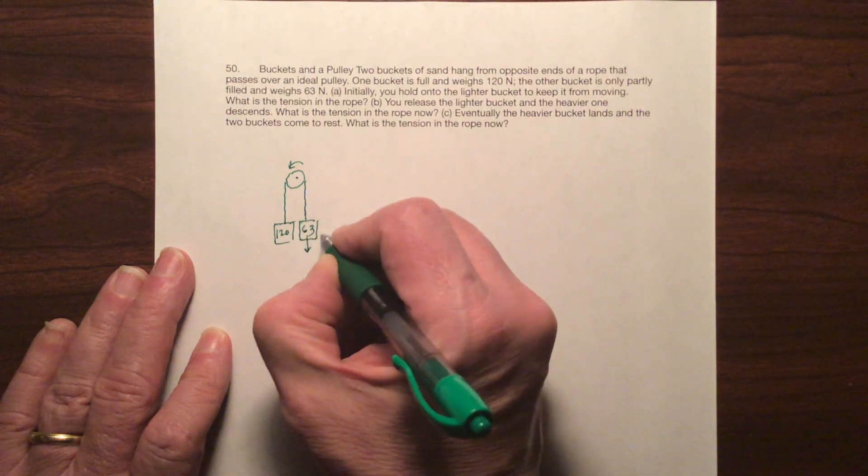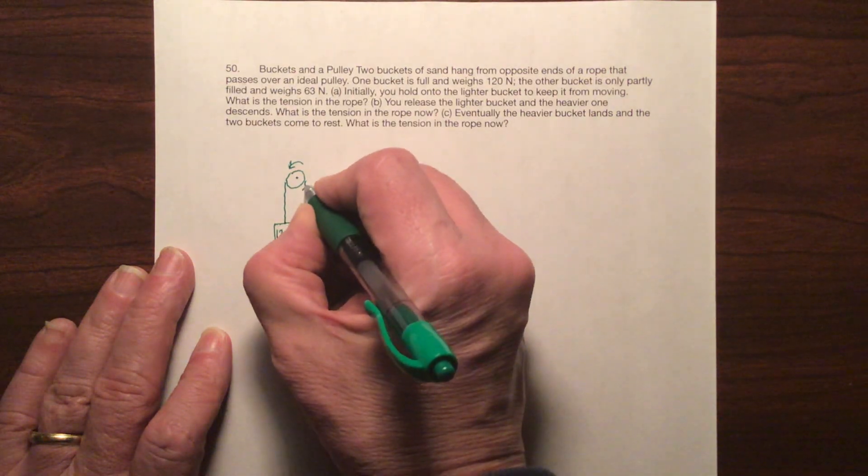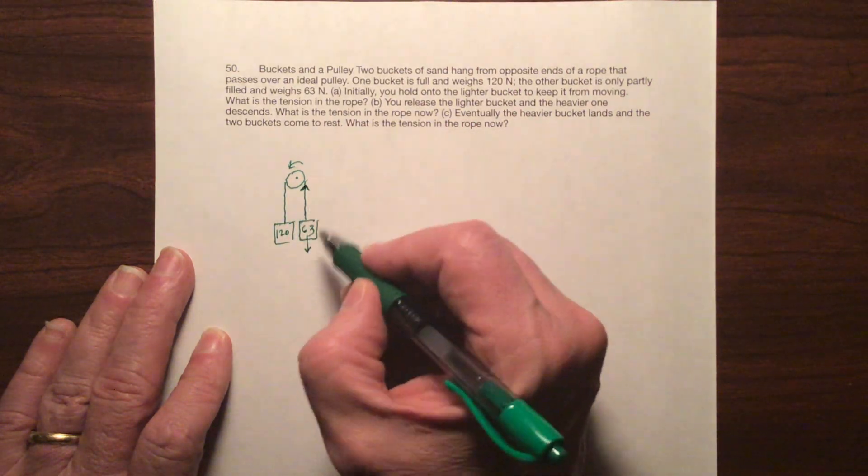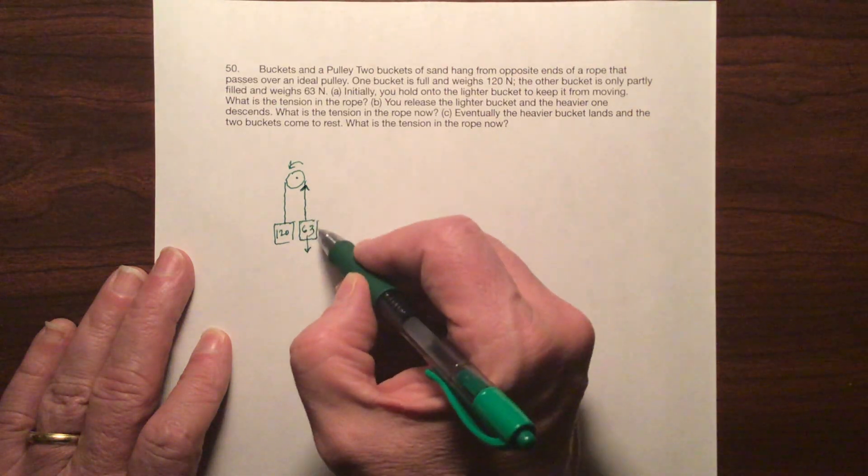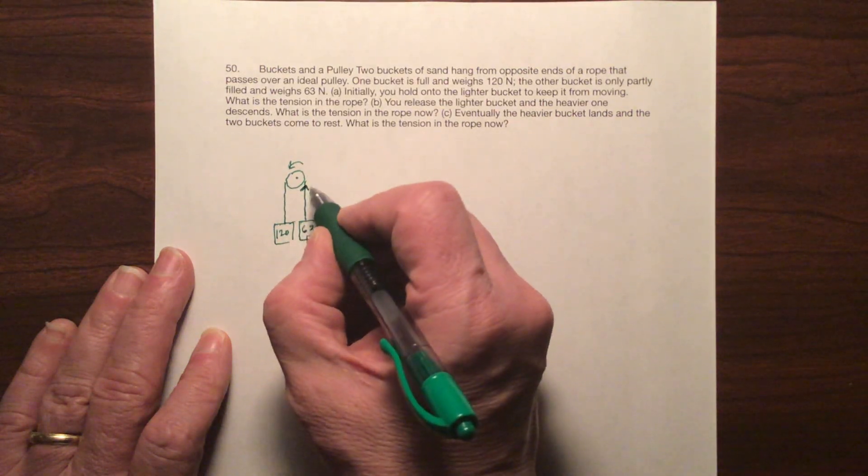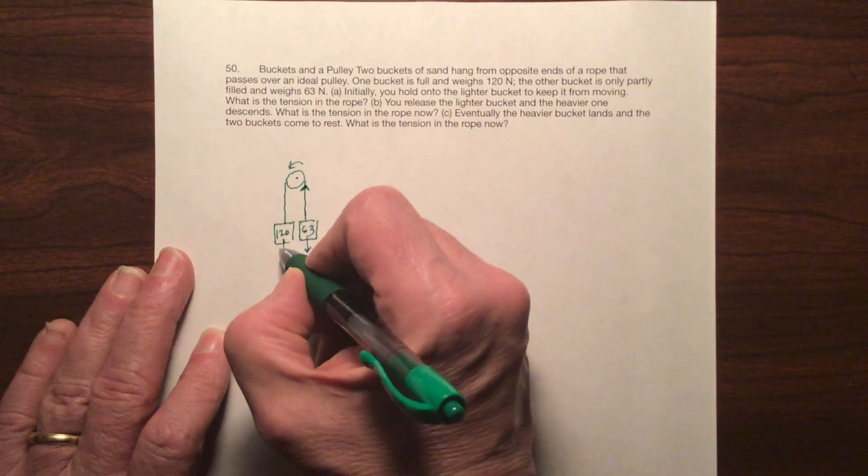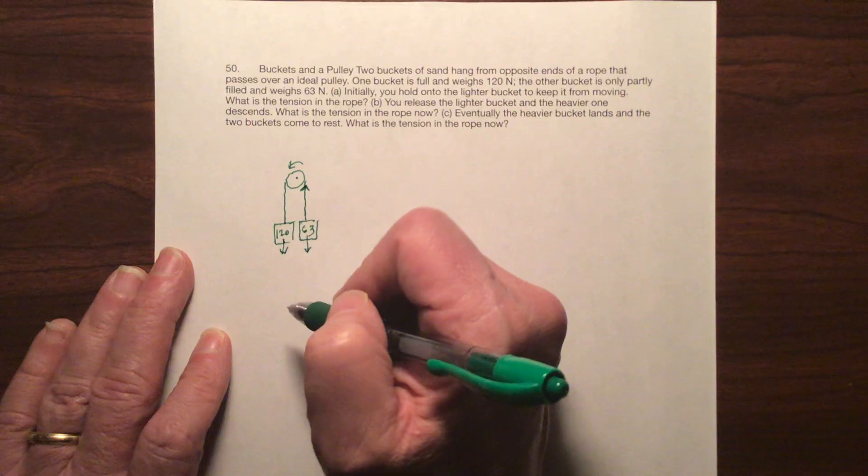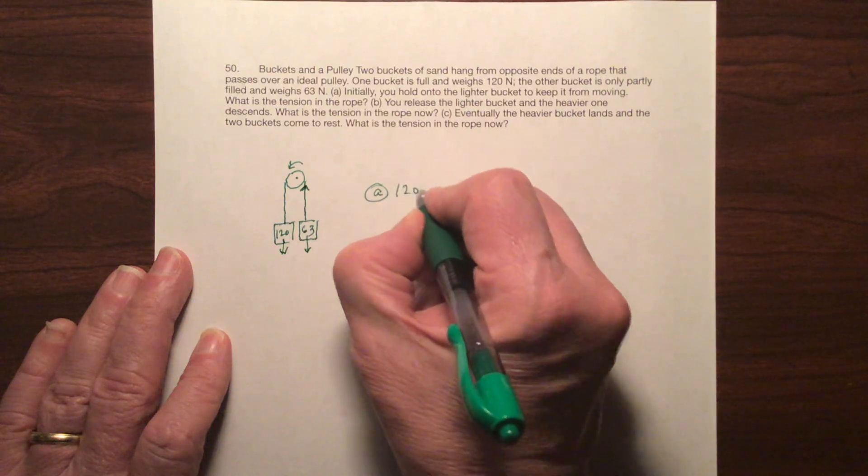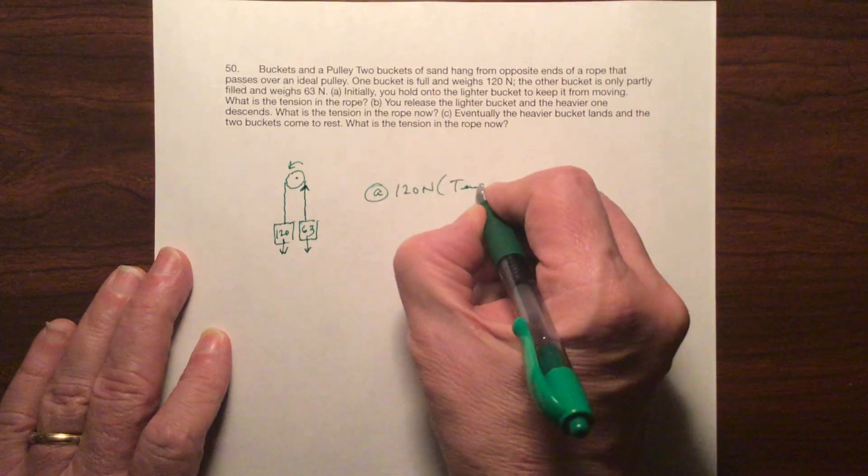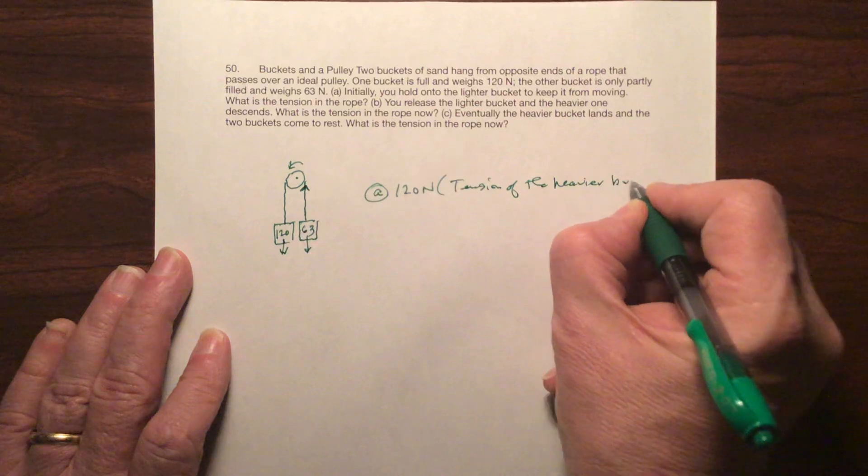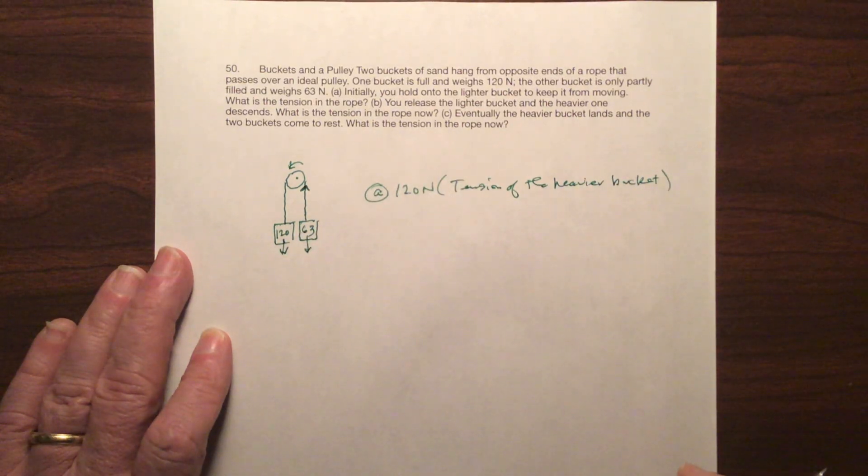Well remember you're gonna have a weight here. That's your 63 Newtons. You're gonna have a tension in the line. Now if this were equilibrium, this would not move. But since this is going to be heavier than this, this is going to accelerate up. This is going to go up and this is going to go down. So this tension has to be this weight. This weight that's pulling down is the tension pulling up. So A is going to be whatever this Newtons are, which is 120 Newtons, which is the tension of the heavy bucket.